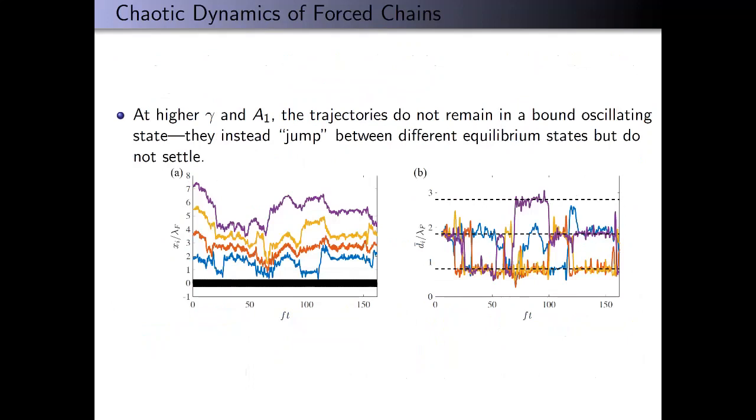Another interesting result we found from our simulations is that for higher gamma and higher A1, instead of the drop trajectories remaining in a bound oscillating state, they instead begin to jump chaotically around. Panel A shows their trajectories, panel B shows cycle averaged inter-drop distances, these d_i values, averaged over one cycle of the forcing on drop one.